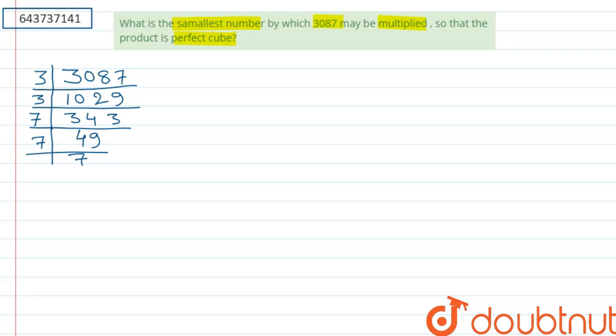From here we can say that 3087 is equal to 3 times 3 times 7 times 7 times 7. Clearly, here 3 is only 2 times, so to make it a perfect cube, we need to multiply 3087 with 3.